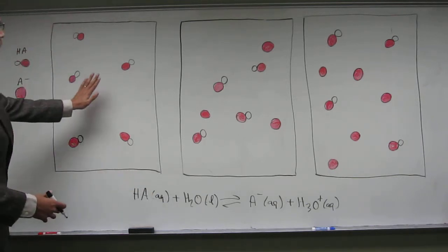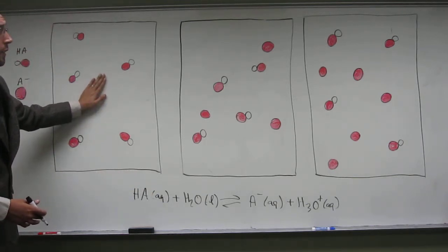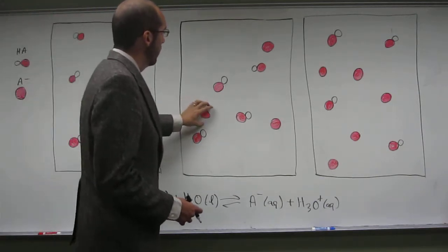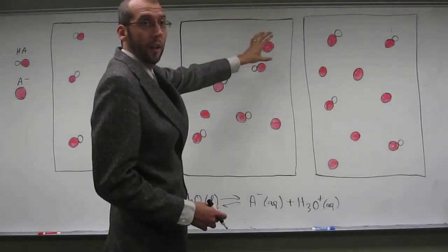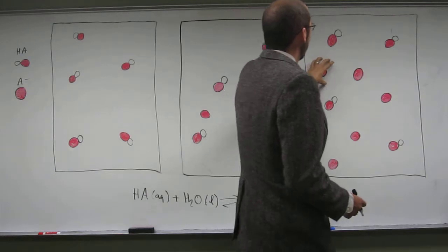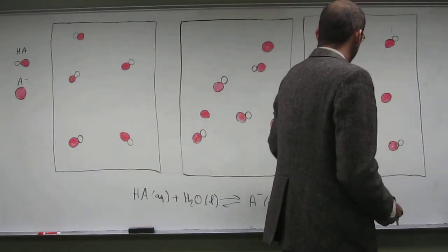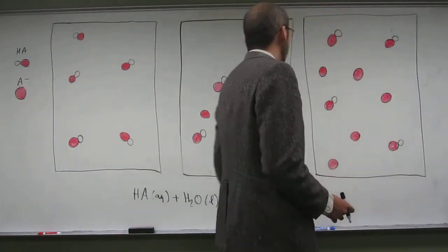So here, zero A minuses. Here we have one, two, three A minuses. And here we have one, two, three, four, five A minuses.